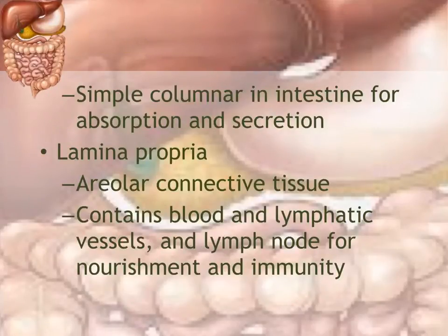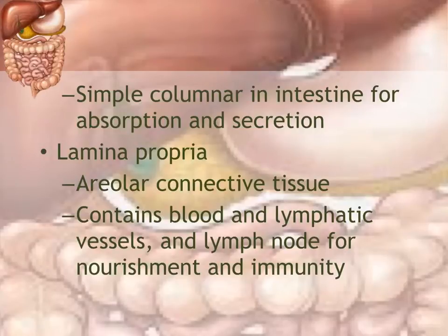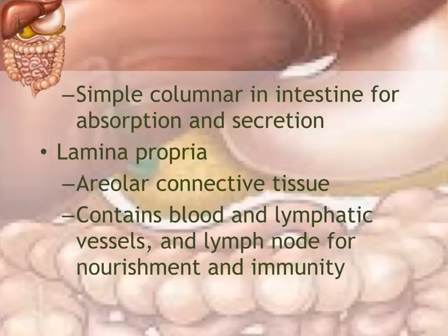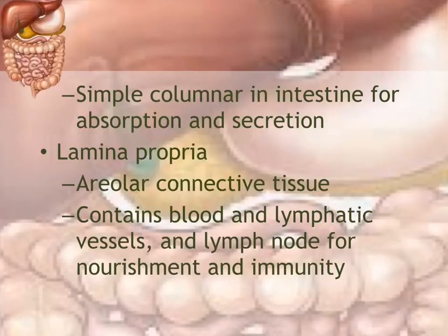The intestines are primarily made up of simple columnar epithelium, which contains goblet cells that produce mucus, and also function in absorption and secretion. Another layer of the mucosa is the lamina propria, made up of areolar connective tissue that joins multiple layers together. It contains blood vessels and lymphatic vessels — important for carrying absorbed nutrients — and also contains lymph nodes to eliminate foreign materials that might be ingested with food.